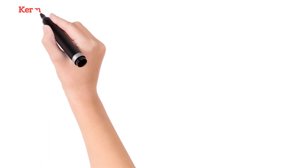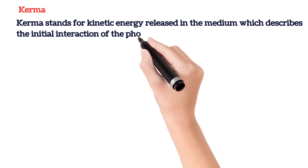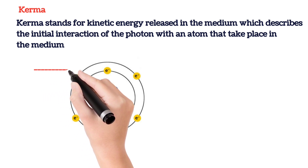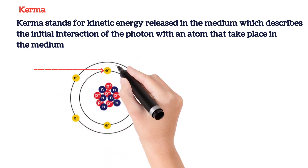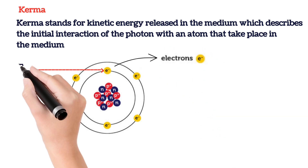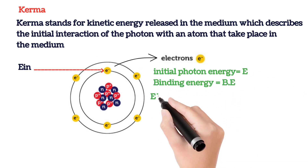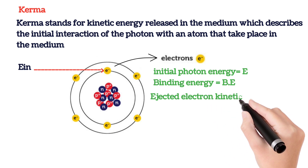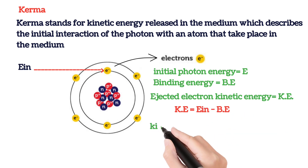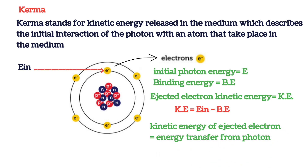Now we discuss KERMA. KERMA stands for Kinetic Energy Released in the Medium, which describes the initial interaction of the photon with an atom that takes place in a medium. When radiation interacts with matter, the uncharged particles like photons and neutrons transfer kinetic energy to the charged particles and they come out from their orbit. For example, if the incident photon has initial energy E and the binding energy of the orbital electron is B, then the ejected electron has kinetic energy KE, where KE equals incident photon energy minus binding energy.